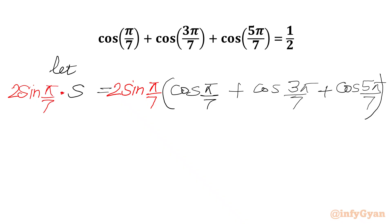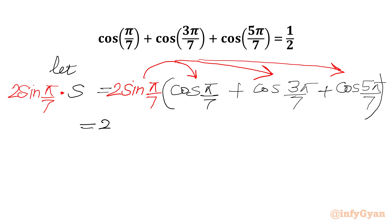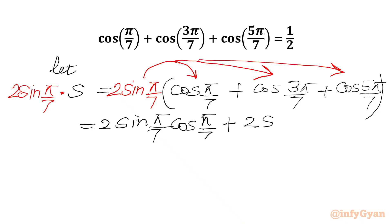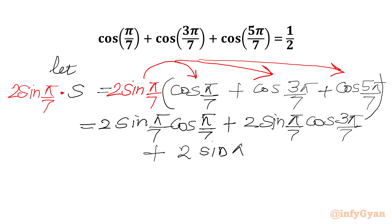Now we have to expand the RHS. We will multiply 2sin(π/7) with each term: cos(π/7), cos(3π/7), and cos(5π/7). So we get 2sin(π/7)·cos(π/7) + 2sin(π/7)·cos(3π/7) + 2sin(π/7)·cos(5π/7).